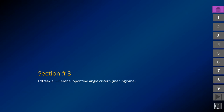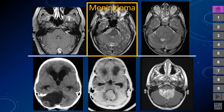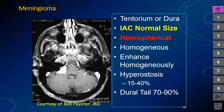The second most common lesion in the CPA cistern is the meningioma. Meningiomas arise from the arachnoid, which is attached to the dura, so the tumor is attached to the dura with a typically broad dural base. The shape tends to be that of a hemisphere rather than a spherical lesion. The internal auditory canal tends to be of normal size. Meningiomas remain homogeneous regardless of age or size. Hyperostosis is seen in 40% to 70%, and a dural tail is seen in up to 90% to 95%.